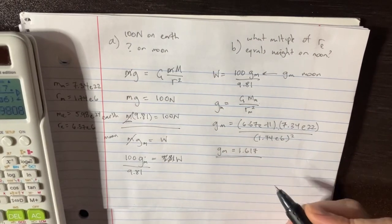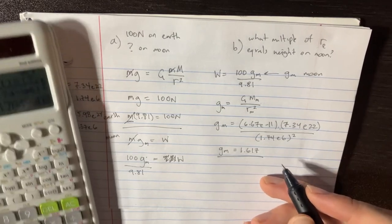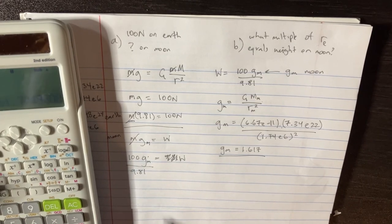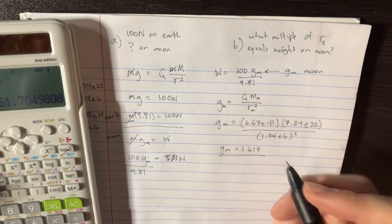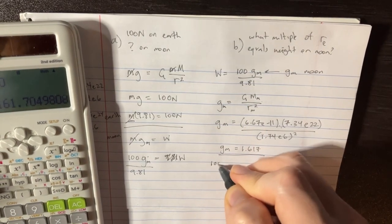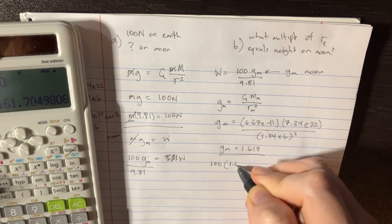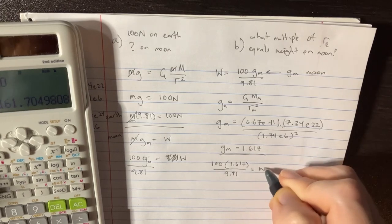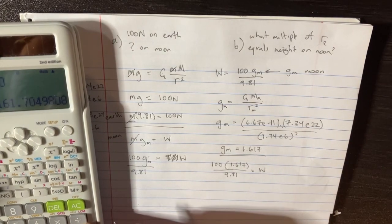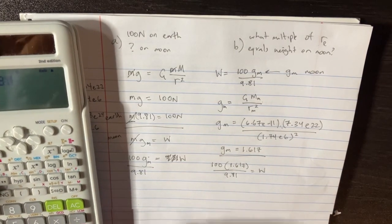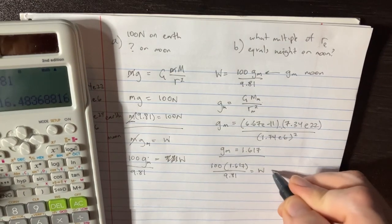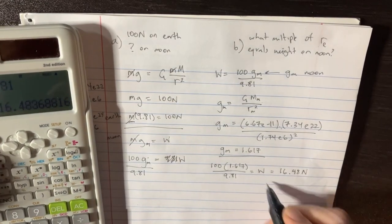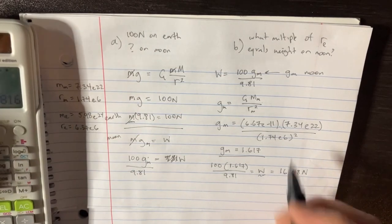All right. So with that, we can go back to original equation and plug it in there, multiply it by 100, and then divide it by 9.81. So that's gonna be 100 times 1.617 divided by 9.81 equal to w. So the w is actually 16.48 newtons. This is the weight of the person on the moon.